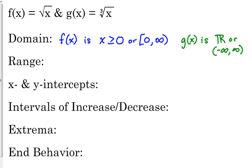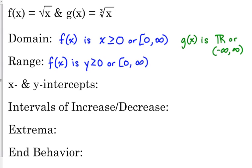So our range — the range is all of our possible y values. If we think about the square root function, we're taking the square root of positive numbers and the result is always going to be a positive number. When talking about it as a function, we restrict it, so y is greater than or equal to zero, or from zero to infinity. So the range is actually the same as our domain, except we're talking about y values.